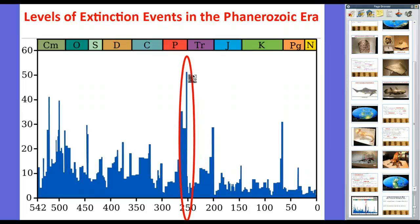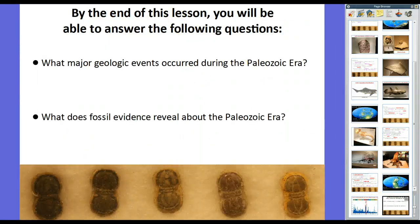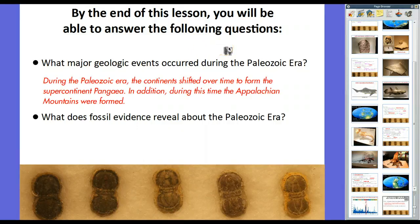The organisms that were left over had an entire planet to themselves to adapt to and take over. That's what we'll talk about in the Mesozoic Era — how dinosaurs essentially took over after the Permian Period ended. So to wrap up: the major geologic events during the Paleozoic Era were the continents shifting over time to form the supercontinent Pangaea by the end of the Permian Period, and the formation of the Appalachian Mountains here in the United States.